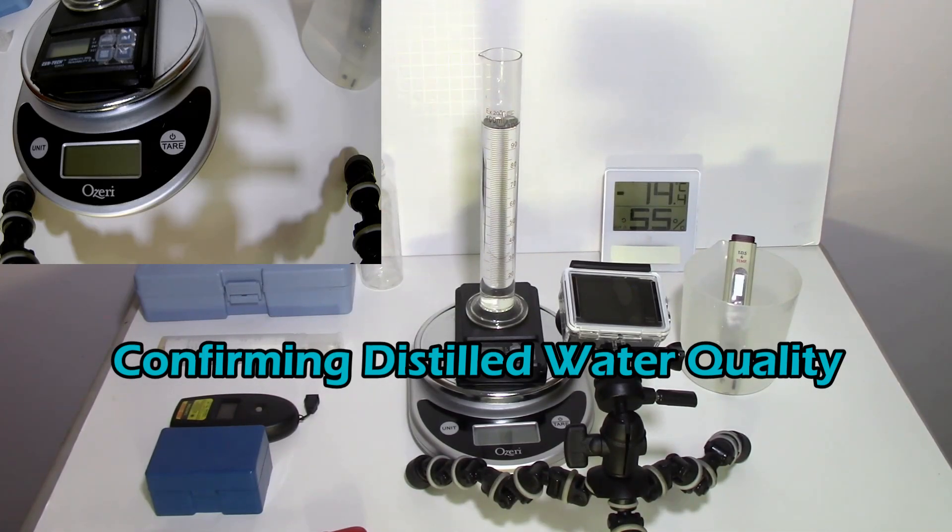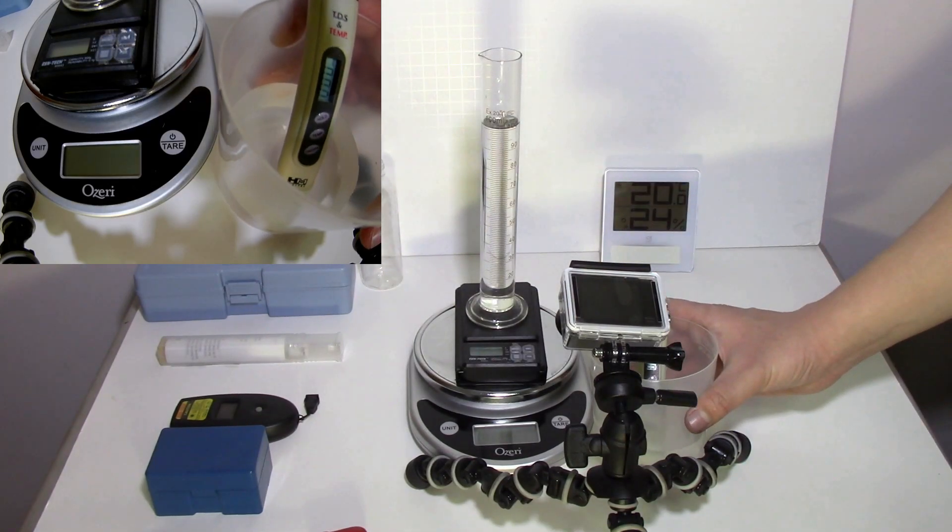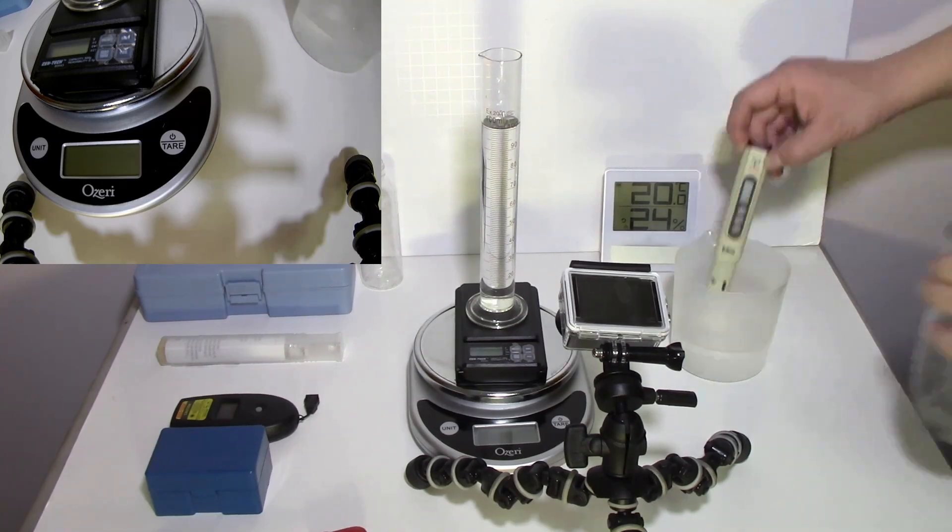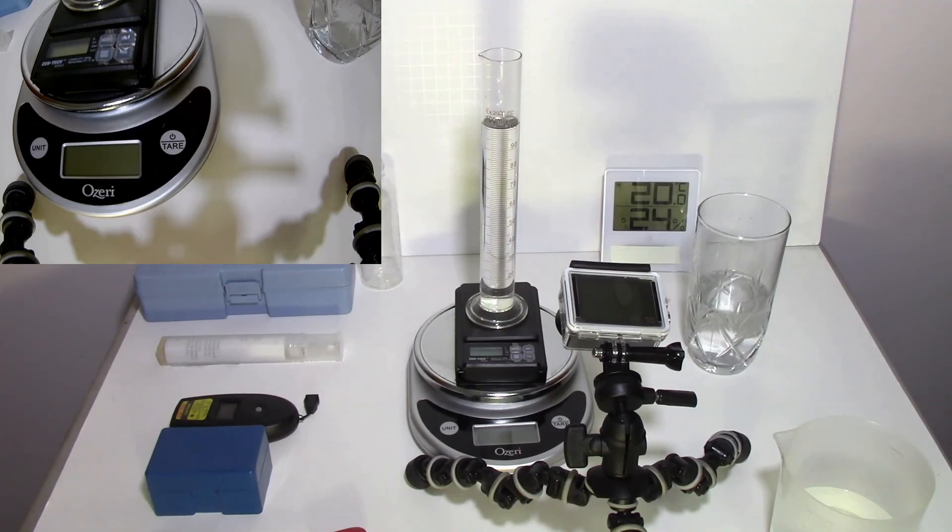Here we have our TDS with temperature compensation, and we read zeros for ppm. We're measuring parts per million. Here's some tap water, and you can see it was reading over 100.